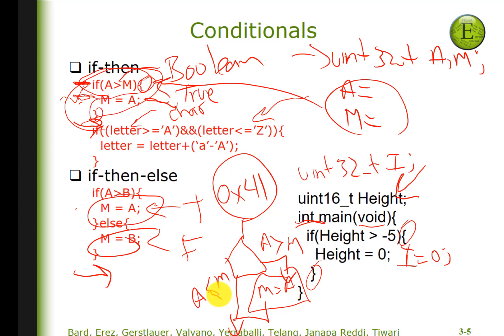When I compare A to M, how many choices do I got? Two. What are they? Is A greater than M, or is A less than or equal to M? If A is less than or equal to M, I do absolutely nothing. If A is greater than M, I'm going to execute this one. And then end up back here.